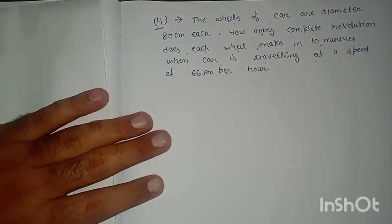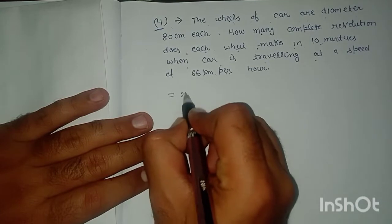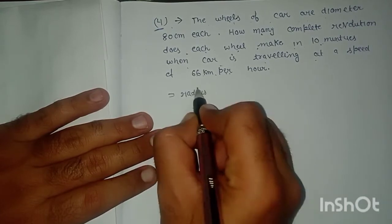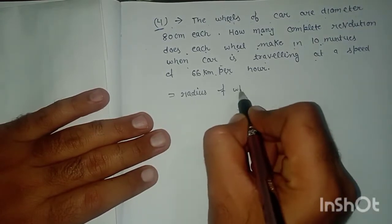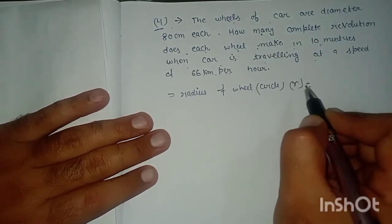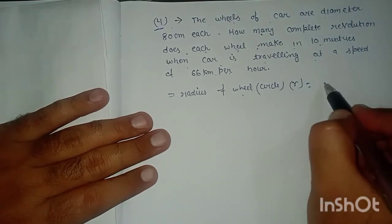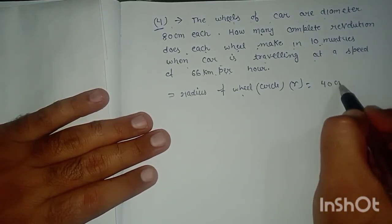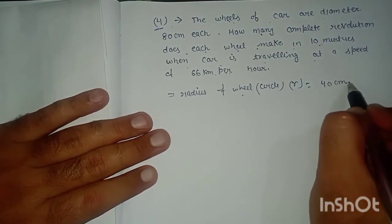First we will find the radius of the wheel. The radius R is 40 cm, since the diameter is 80 cm.